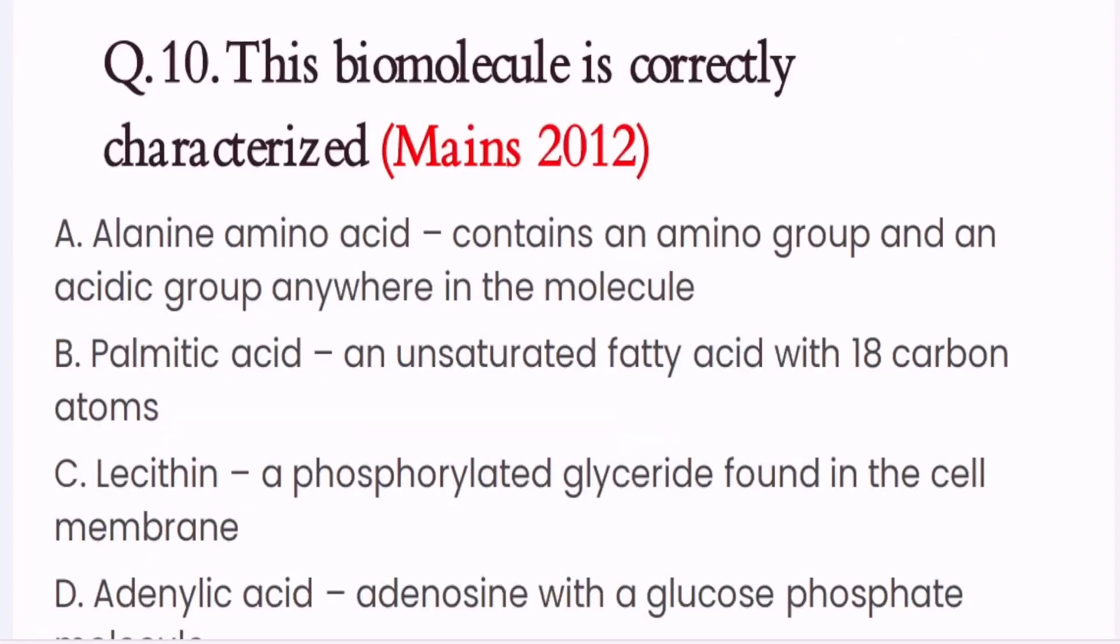Question 10. This biomolecule is correctly characterized. A. Alanine amino acid contains an amino group and an acidic group anywhere in the molecule. B. Palmitic acid, an unsaturated fatty acid with 18 carbon atoms. C. Lecithin, a phosphorylated glyceride found in the cell membrane. D. Adenylic acid, adenosine with a glucose phosphate molecule. The correct option is C. Lecithin, a phosphorylated glyceride found in the cell membrane.